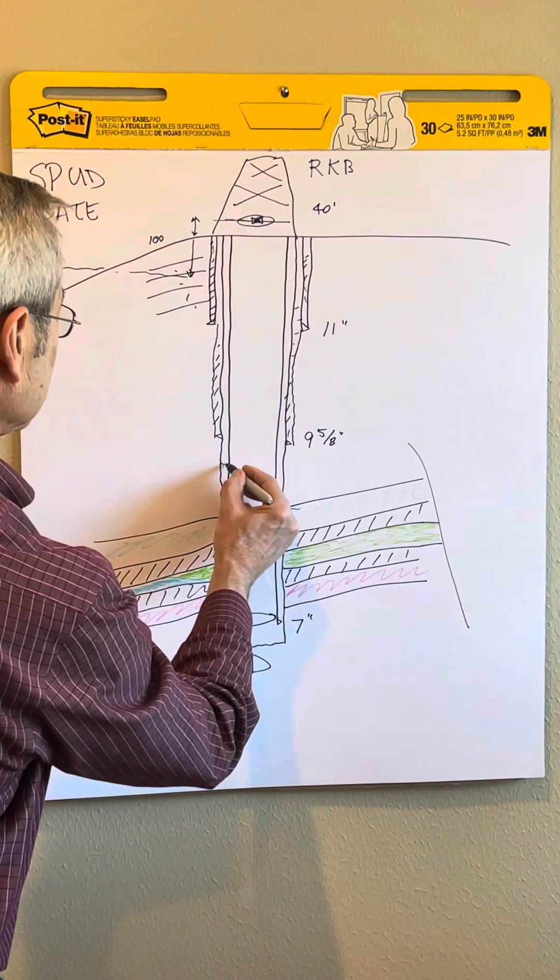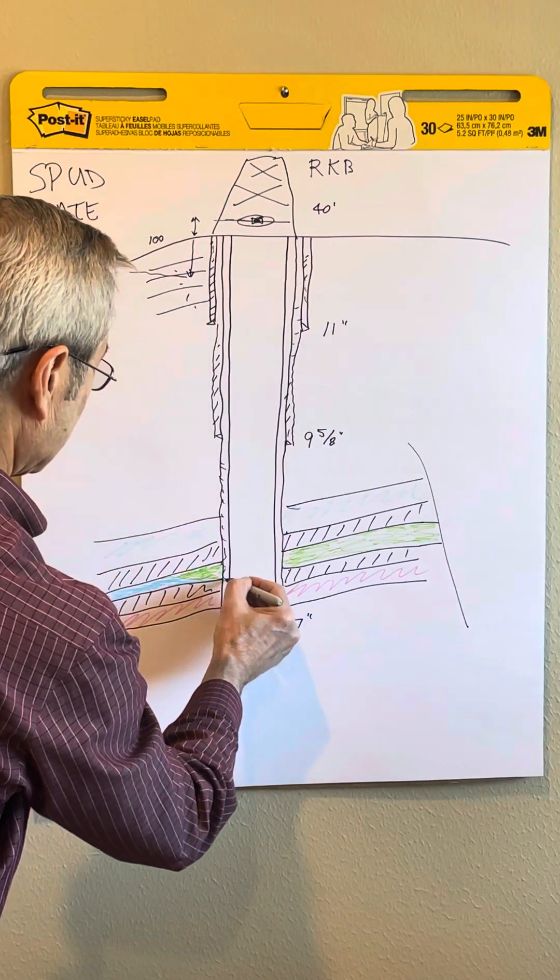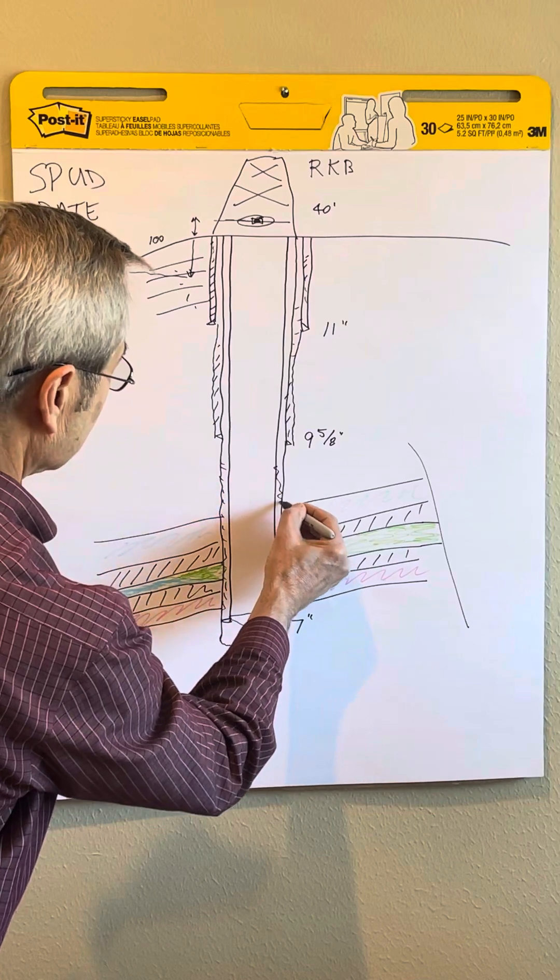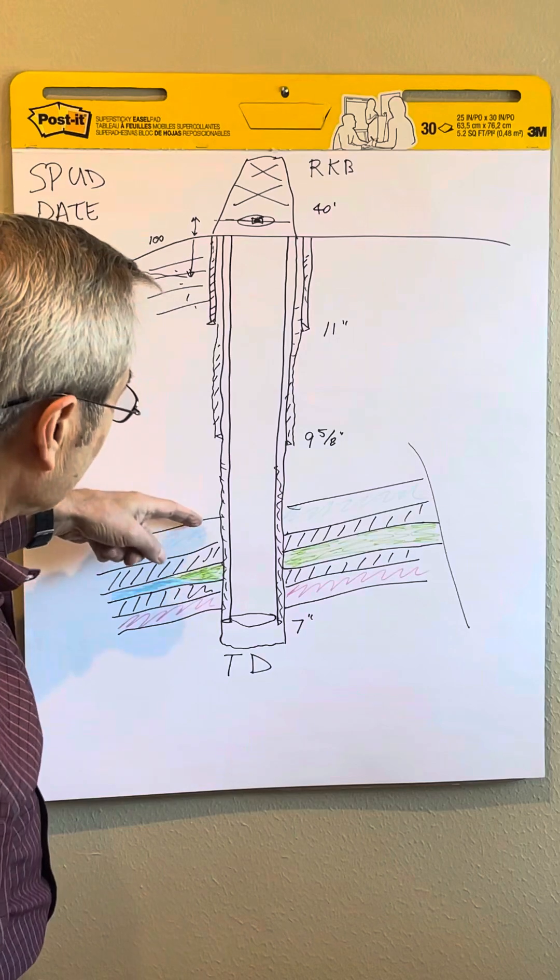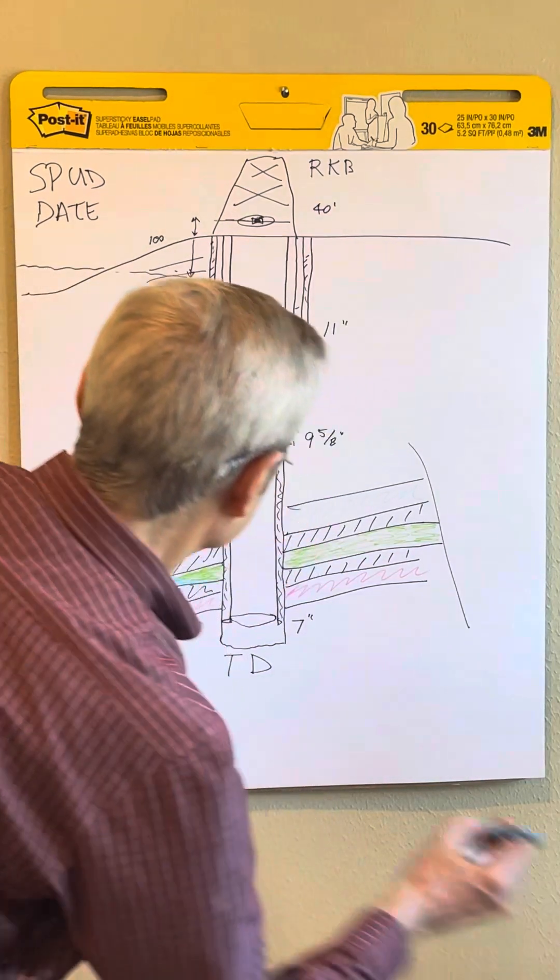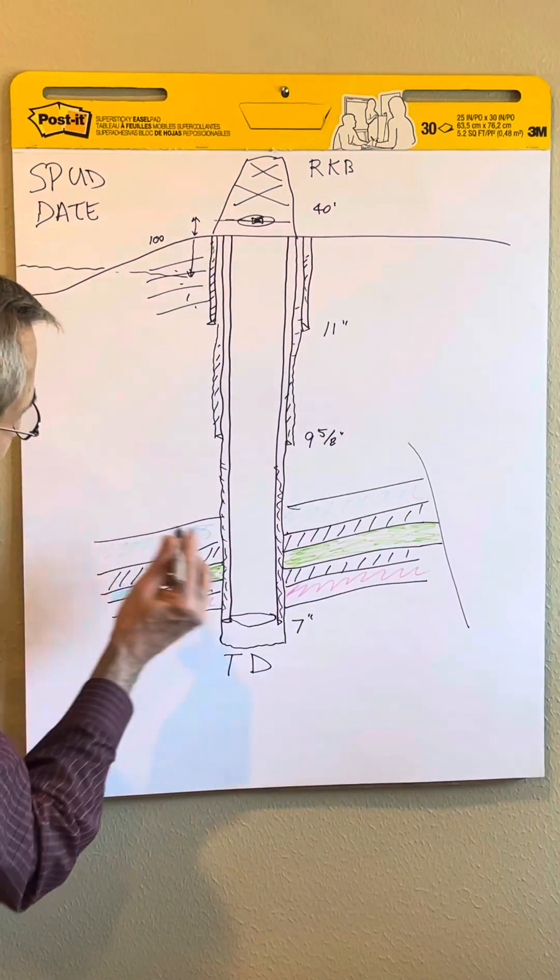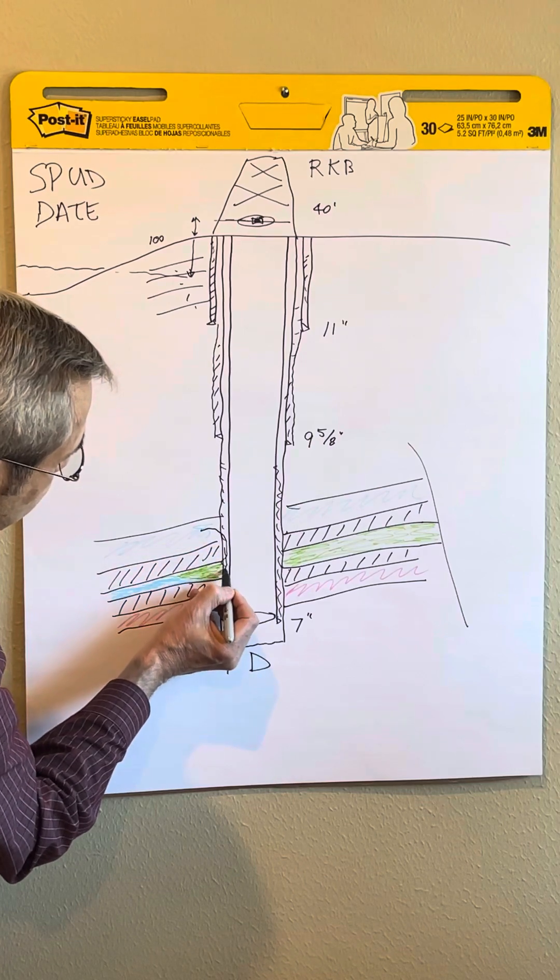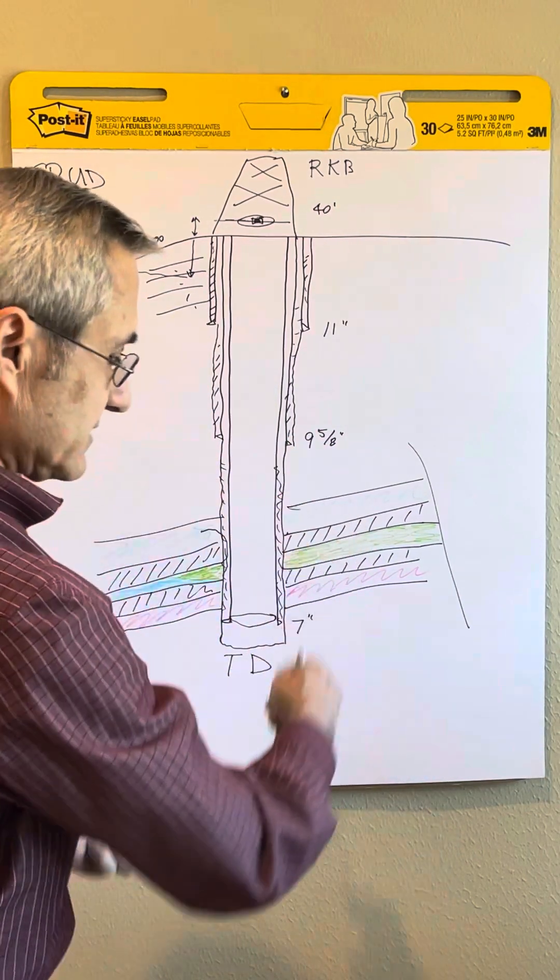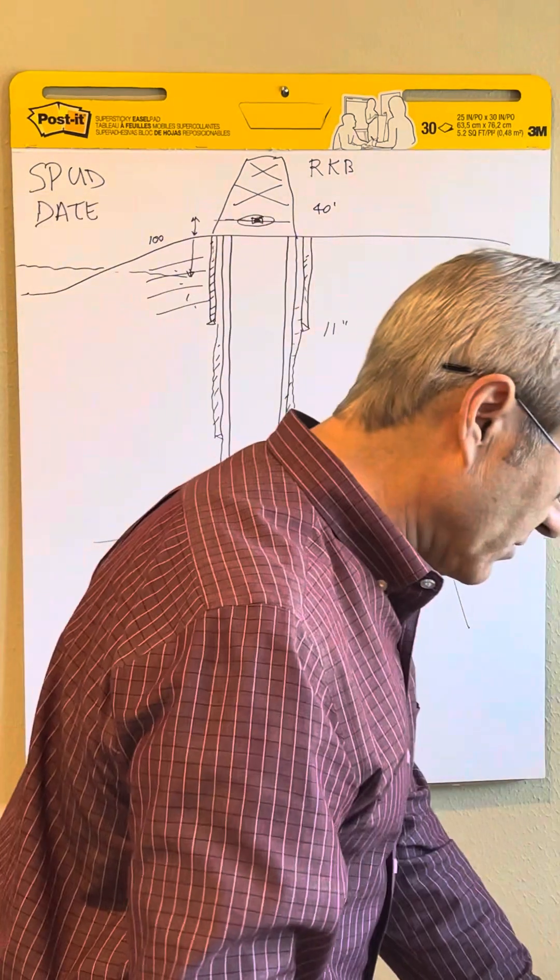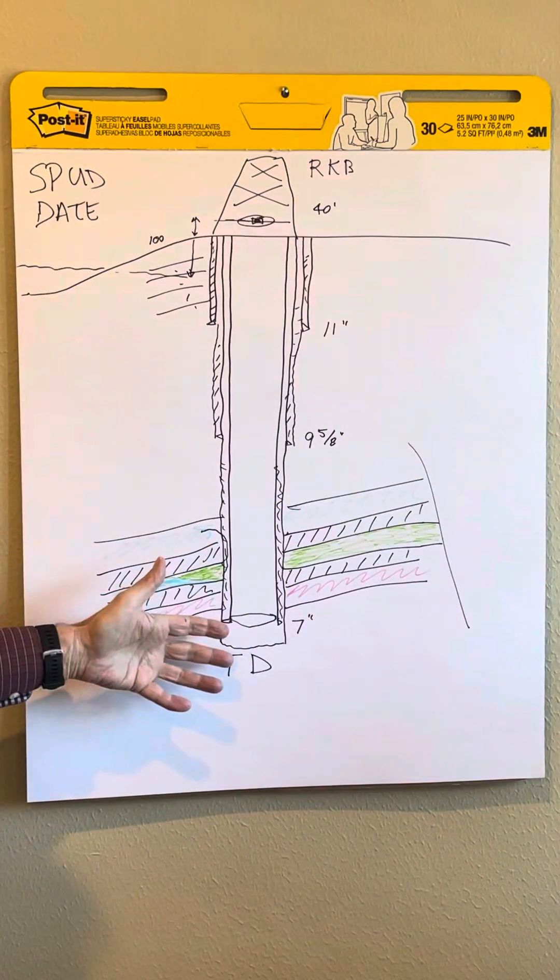Again, you cement it, cement up this annulus space. That keeps the hole from caving in and it also isolates the water zones from the oil and gas zones. You don't want the water zone leaking down here into the oil - that would contaminate the oil. The cement isolates all the zones.